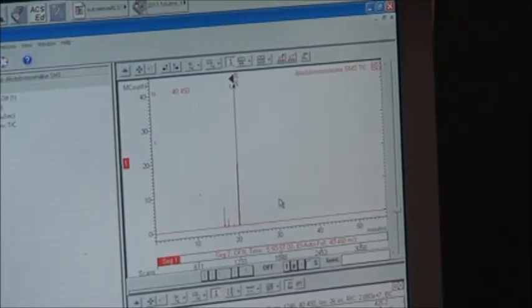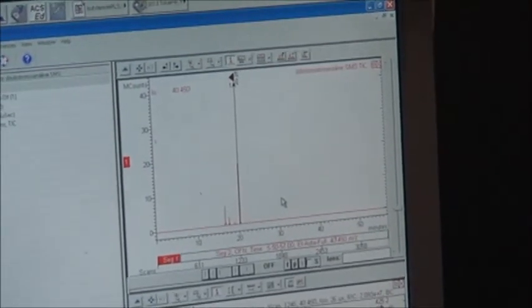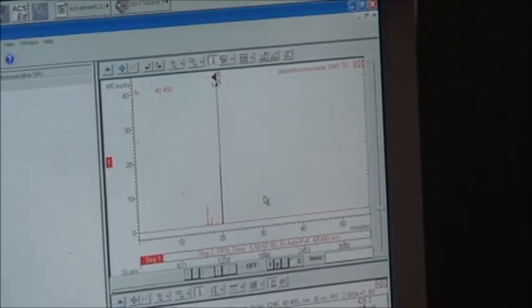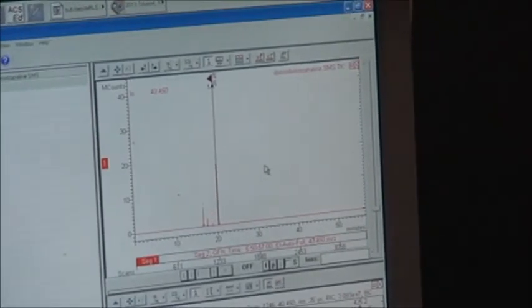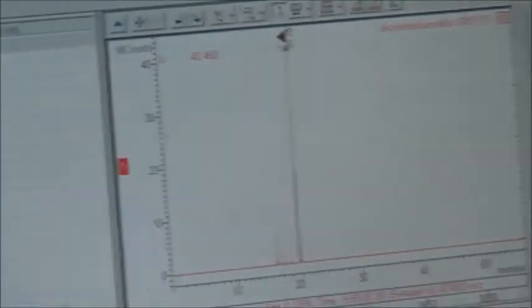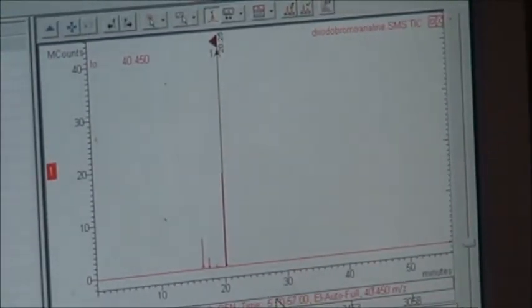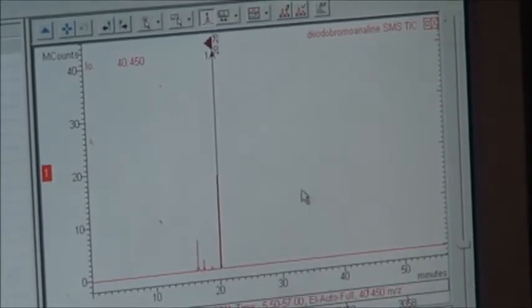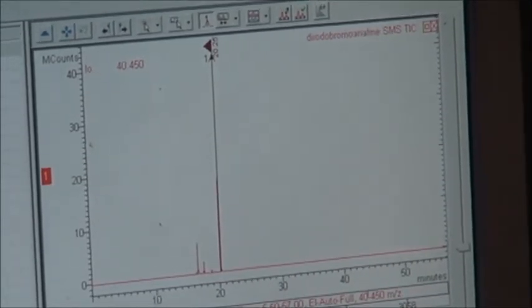The sample represented by this graphical data is para-bromoaniline. The top represents the GC component of the spectrum. It basically represents retention time, which shows you at what time the separation occurred for each component.